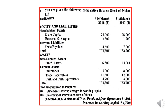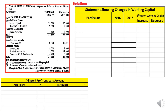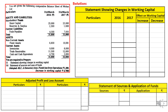Looking at the first question, we have a comparative balance sheet for 31st March 2016 and 2017. On the liabilities side: shareholders' fund, share capital, reserves and surplus, and trade payables. On the assets side: fixed assets, and current assets including inventory, trade receivables, and cash and cash equivalents. There are no adjustments. We are asked to prepare the statement showing changes in working capital, calculation of funds from operations, and finally the sources and application statement. We will simultaneously draw all three formats: the statement showing changes in working capital, the adjusted profit and loss account, and the statement of sources and application of funds.